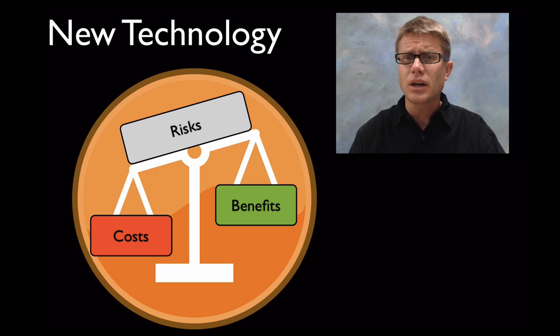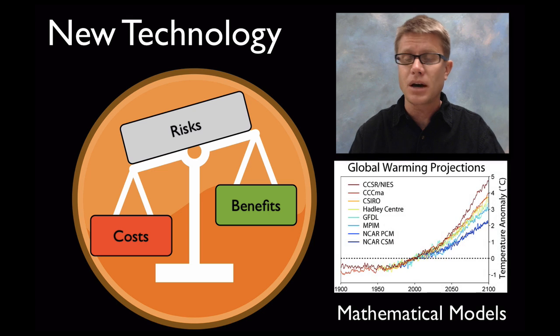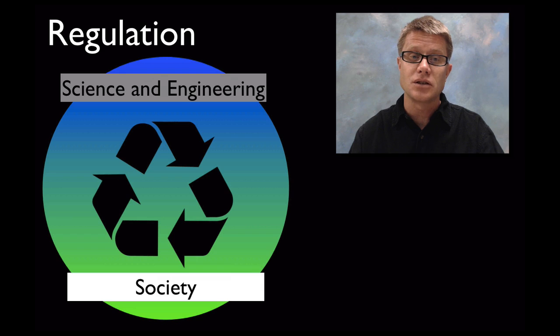How do we look at costs, benefits, and risks of something that hasn't happened? Well mathematical models help out. We can use mathematical models to predict what's going to happen in the future and then make wise decisions based on that.